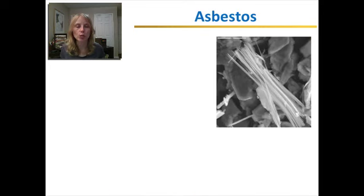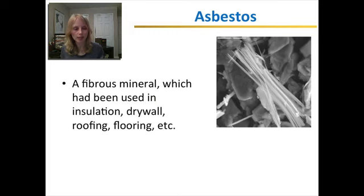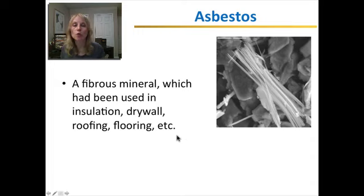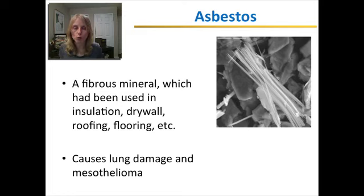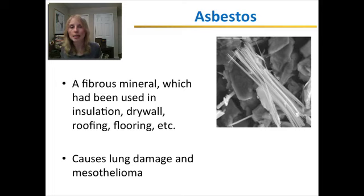Another indoor air pollutant is asbestos, a fibrous mineral. It was commonly used in insulation, drywall, roofing, and flooring. It is no longer used because it was found to cause lung damage and a type of cancer known as mesothelioma. However, even though it is no longer used in new building materials, if you live in an older building it can still be present — whenever they change the roofing or siding in older buildings, they have to check whether asbestos is present.